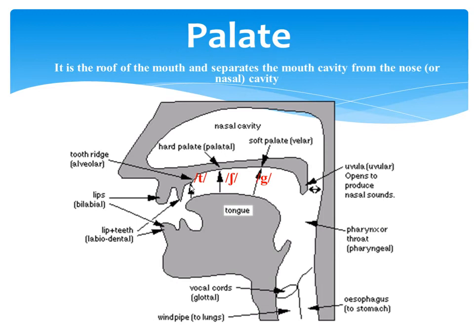It has the alveolar ridge, the hard palate, the soft palate, and the uvular. Each part of the roof of the mouth is responsible for the production of specific speech sounds, and this is determined by the flexibility of the tongue.